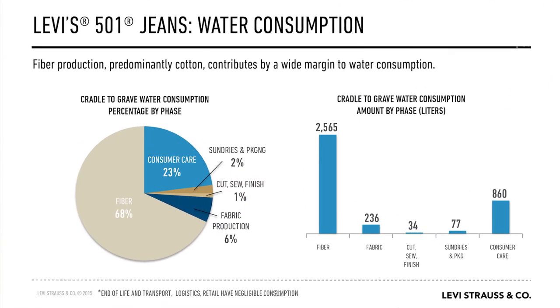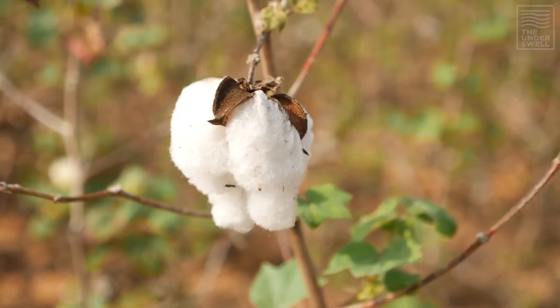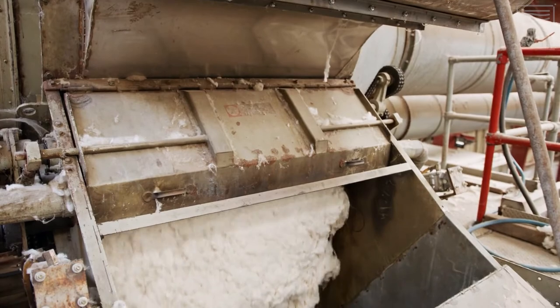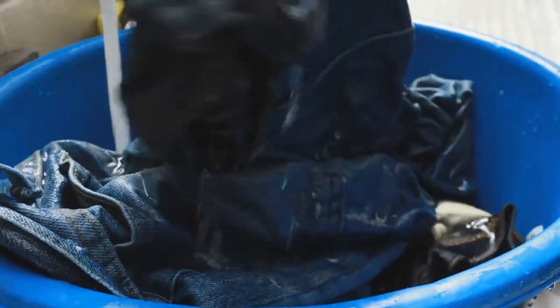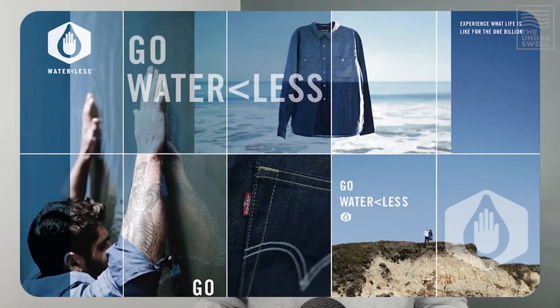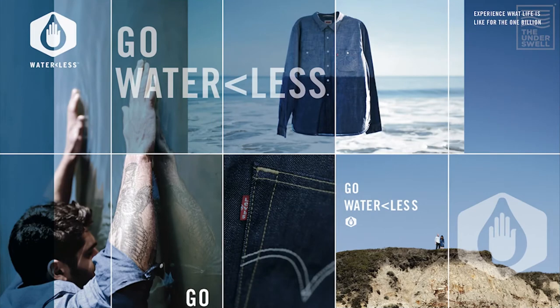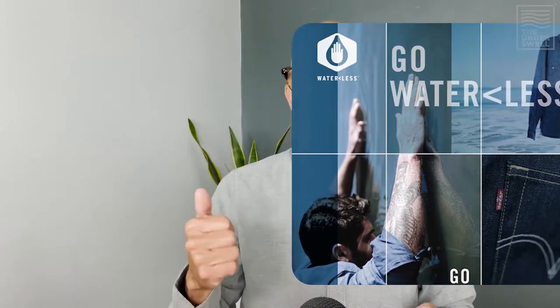What the Levi's lifecycle assessment found was that their biggest footprints, especially for water, were back in tier four and tier three — harvesting and growing cotton, processing — plus a little bit of dyeing, and then consumer use. As consumers wash their products, there's a big footprint there too. So they had these two spikes of water footprint, and that data allowed them to launch their waterless campaign. You'll still see products with the waterless logo. It helped them tackle water footprinting in their supply chain.